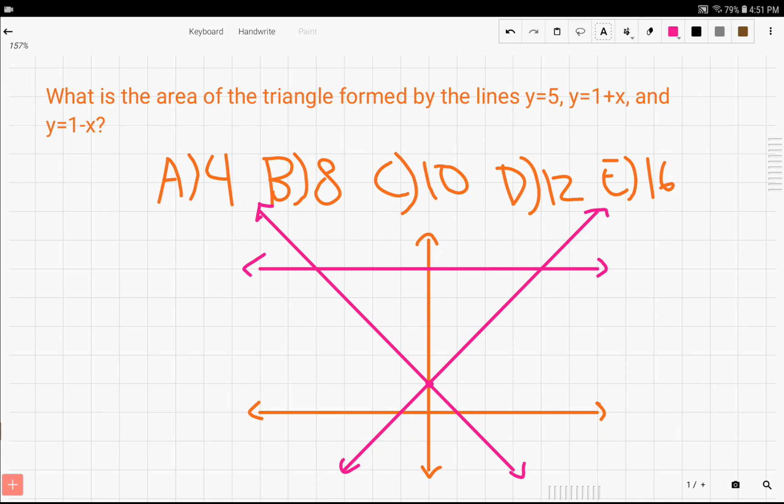Now, if we create a simple coordinate graph and graph our lines, we realize that we have created a triangle with base length of 8 and height of 4.